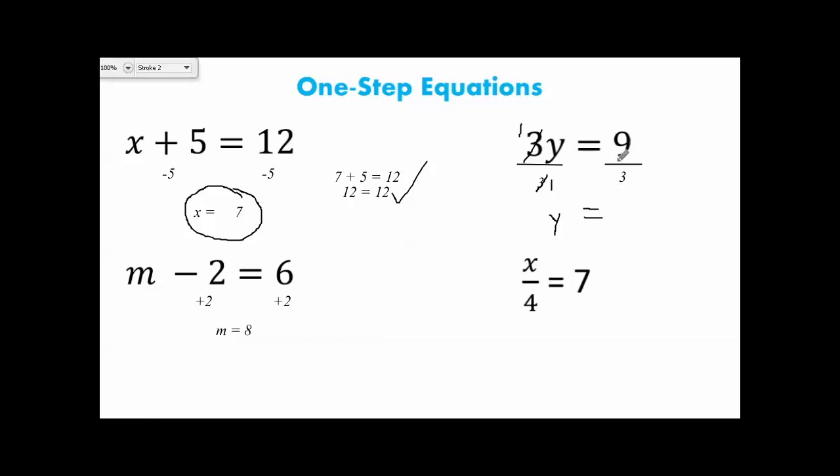On the right-hand side, we have 9 divided by 3, and 9 divided by 3 is 3. We could plug our 3 back in: 3 times 3 equals 9. That is a true statement, so we know our answer is correct.